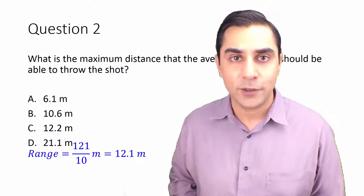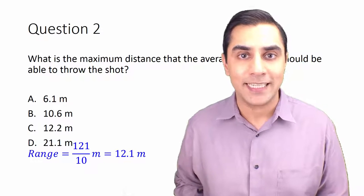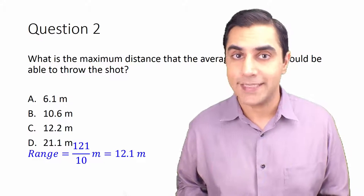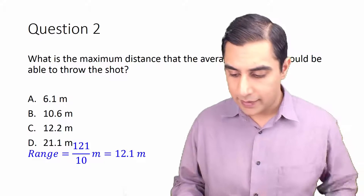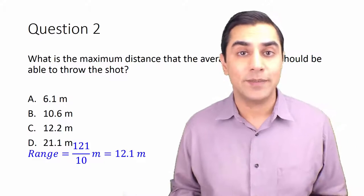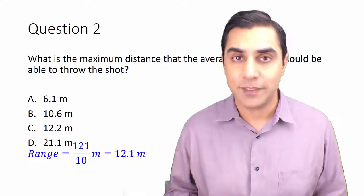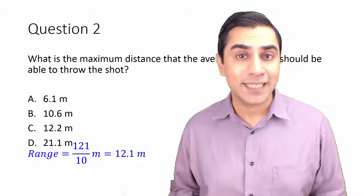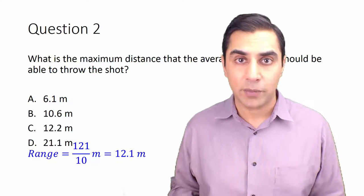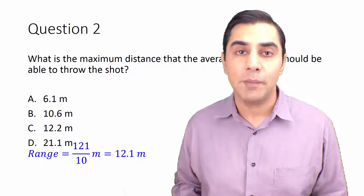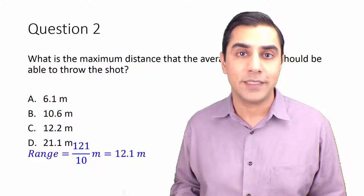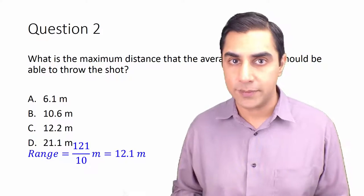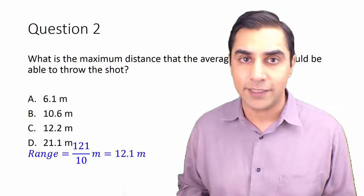Thus the range is 121 divided by 10, or 12.1 meters. Taking our prediction to the answer choices, the closest match is C, 12.2 meters. Notice the real answer is slightly larger than our estimate — since we divided by 10 for g, which is slightly larger than the actual value of 9.81 m/s², our estimate was a slight underestimate. That's part of our logic check and helps us gain confidence in our answer.